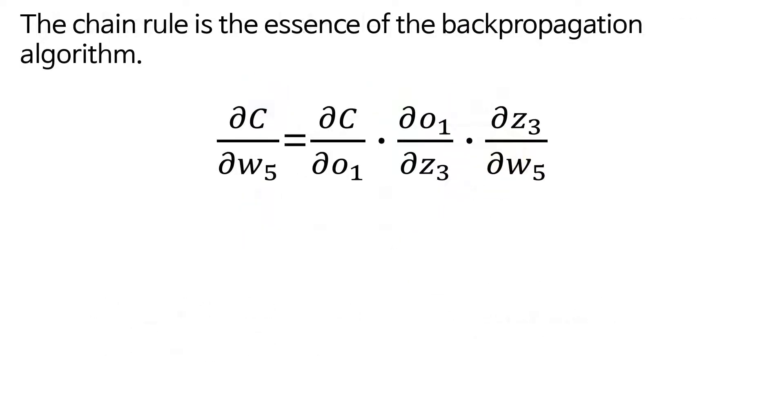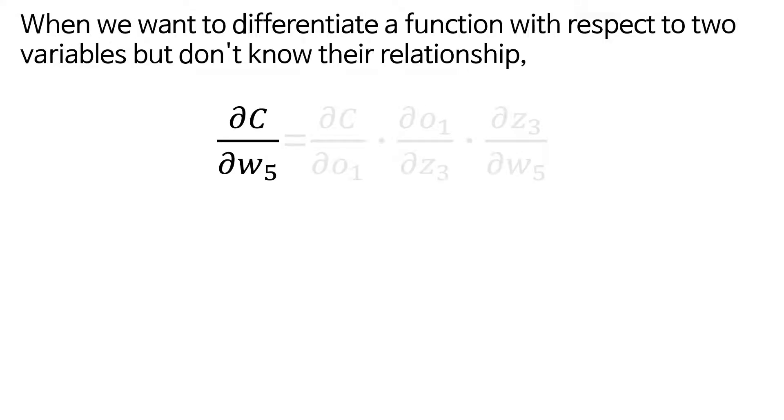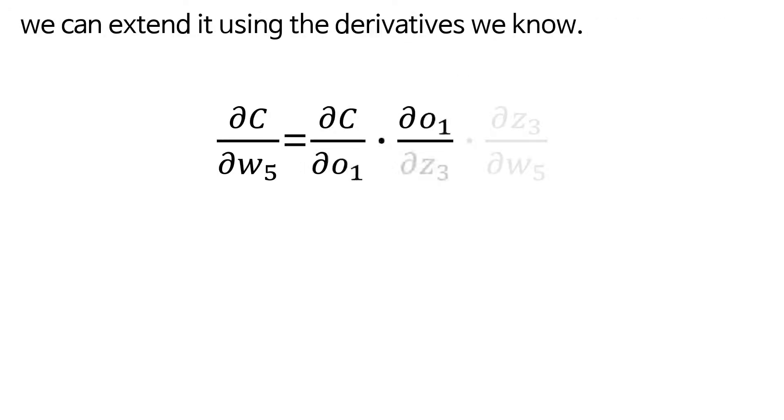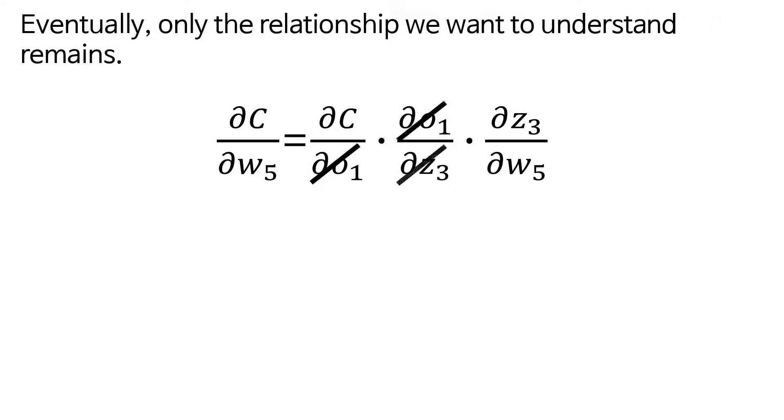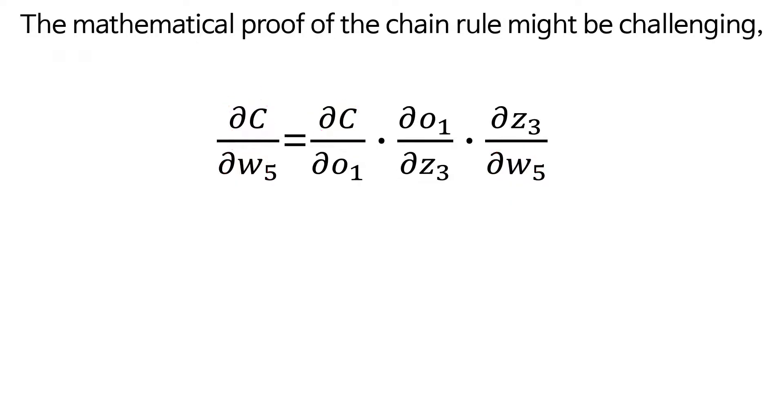The chain rule is the essence of the backpropagation algorithm. When we want to differentiate a function with respect to two variables but don't know their relationship, we can extend it using the derivatives we know. By addressing parts of the problem, we can potentially solve the whole problem.